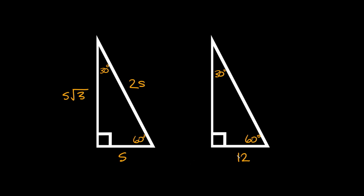Here is our first 30-60-90 example. As you can see, the shortest side is labeled as 12, so the hypotenuse is going to be double that number — so 24. And then the long leg is going to be the short side, 12, times the square root of 3. That's how we relate all three sides.